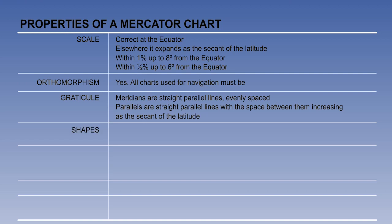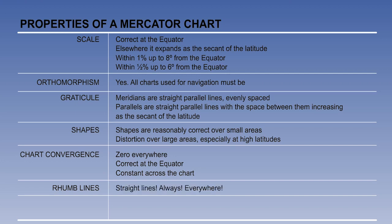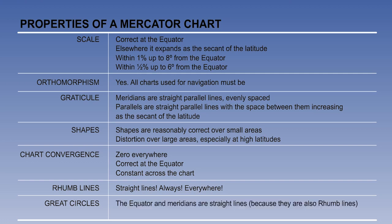Shapes are reasonably correct over small areas, but there is distortion over large areas, especially at high latitudes. Chart convergence is zero everywhere — it is correct at the equator, and constant across the chart. Rum lines are straight lines. Great circles: the equator and meridians are straight lines because they are also rum lines. All other great circles are curves, with a track nearer the pole, or concave to the equator.